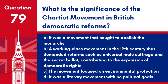Question 79: What is the significance of the Chartist movement in British democratic reforms? a. It was a movement that sought to abolish the monarchy. b. A working-class movement in the 19th century that demanded reforms such as universal male suffrage and the secret ballot, contributing to the expansion of democratic rights. c. The movement focused on environmental protection. d. It was a literary movement with no political goals. Answer: b. The Chartist movement was crucial in the fight for greater political representation and rights for the working class.